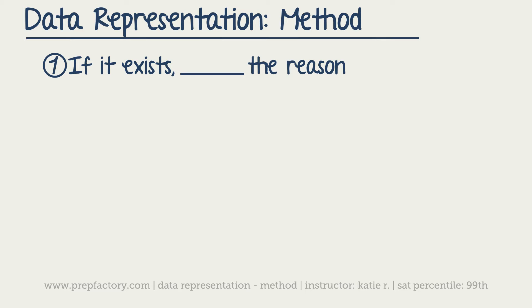The next thing is again, if it exists, you can circle method. Now, method is again not as likely to show up. Sometimes they'll explain the method for which they were able to determine whatever the plot points are on a graph, but a lot of times they just will say the scientists were interested in this phenomenon,